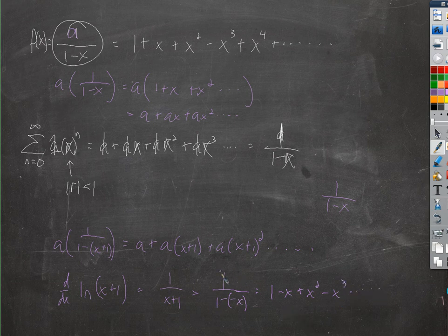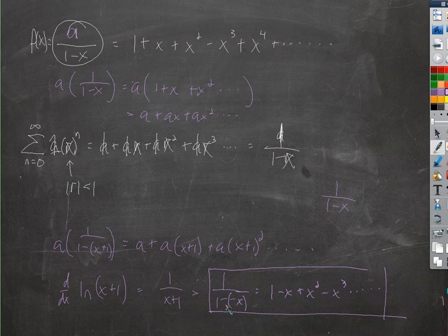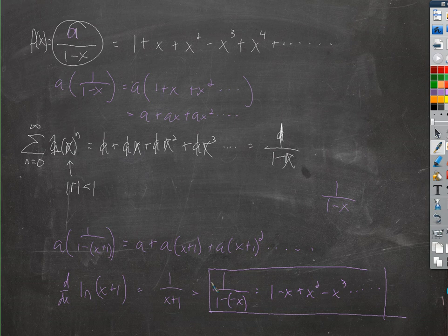And then, so if this is equal to that, if I took the anti-derivative of this, I would get the natural log of x plus 1, right? So I'd have to take the anti-derivative of this, so the anti-derivative of this is equal to the natural log of x plus 1. And so we use those kinds of manipulations as well.